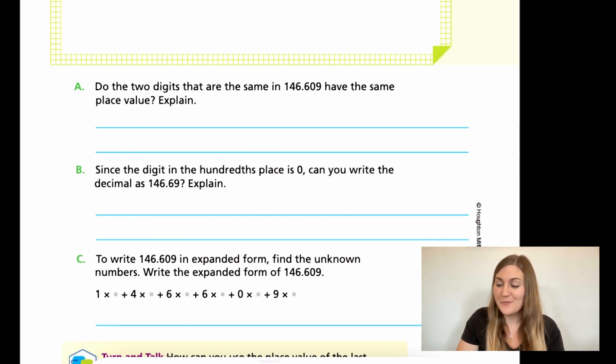And then for C, to write 146 and 609 thousandths in expanded form, find the unknown numbers. Write the expanded form of 146 and 609 thousandths. So underneath, they give you a hint, and you're just filling in those little gray squares with the place value. So it says one times, what's the place value of one? Fill in the gray with that square. Four times, what place value is the four in? Fill in that gray square. And so on and so on. And you're going to rewrite it as a full expanded form sentence underneath. Alright, go ahead and try your best on this problem. We'll come back and solve them together. Go ahead and hit pause here.